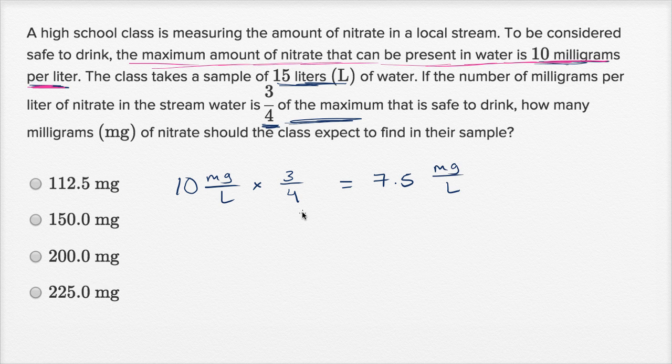The way I think about this, 3/4 of 100 is 75, so 3/4 of 10 is going to be 7.5. You could have done it other ways. You could say 10 times 3 is 30, 30 divided by 4 is 7.5, and you keep your units.